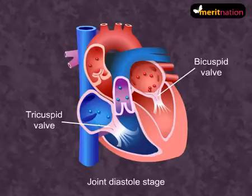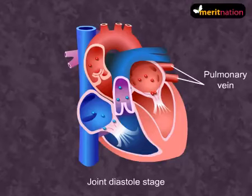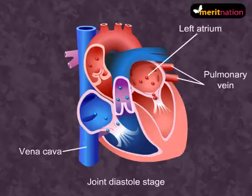So what will happen? The blood will flow from the pulmonary vein and vena cava to the left and right atrium respectively.